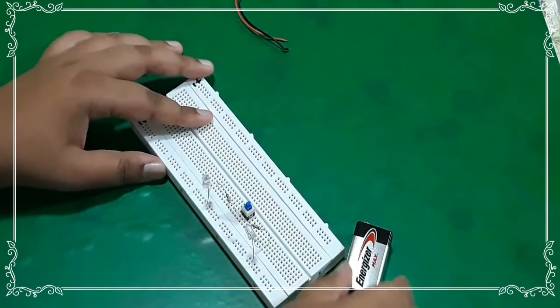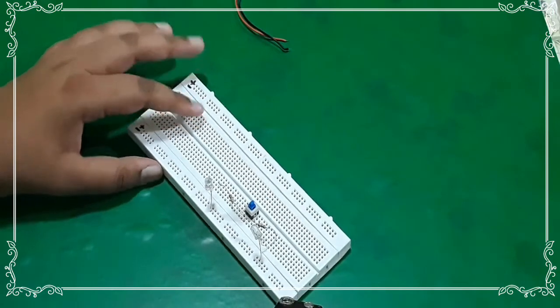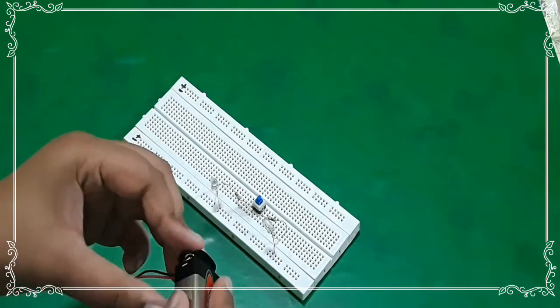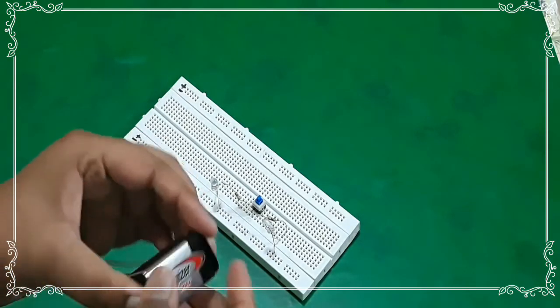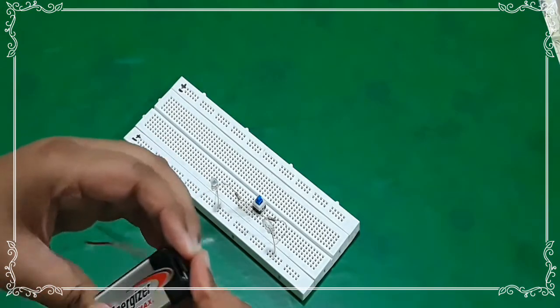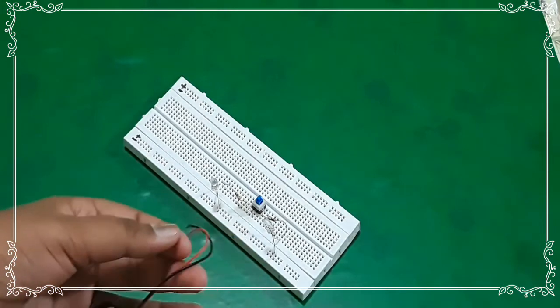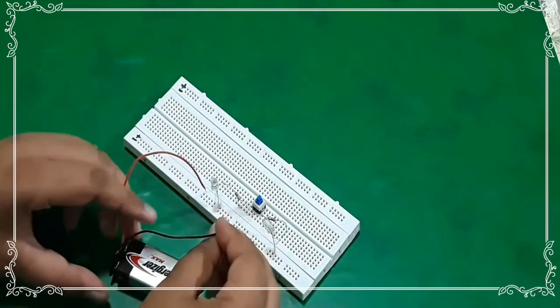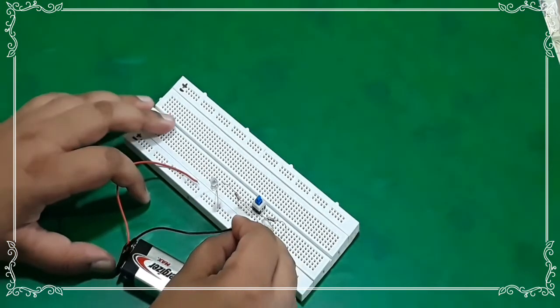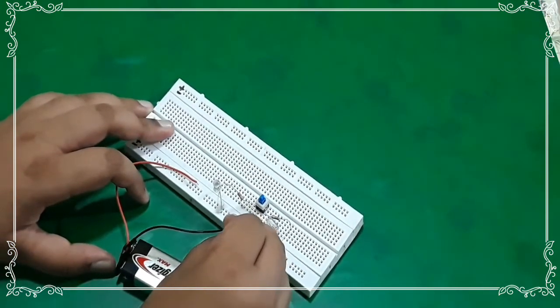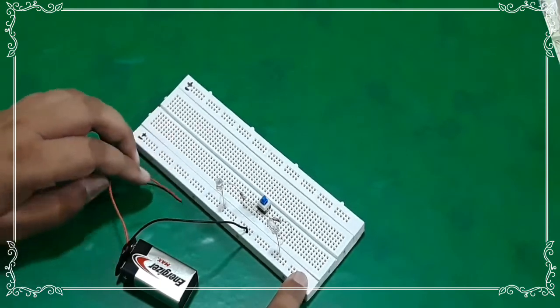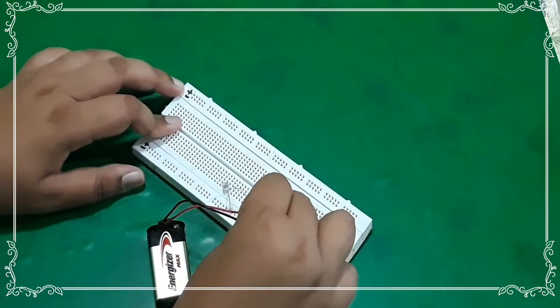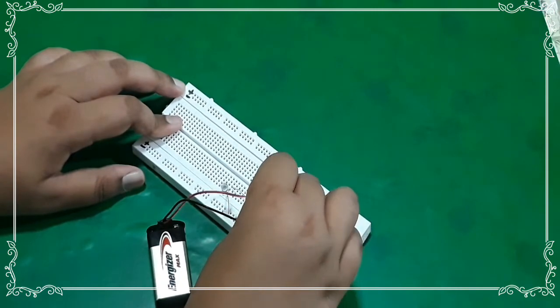And now you have to connect the 9V battery with the 9V battery connector. And now you have to connect the negative terminal of the battery on the negative part of the power supply, and the positive terminal in the middle terminal of the SPDT switch.